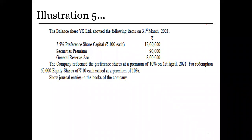For redemption, 60,000 equity shares of Rs. 10 each were issued at par at 10% premium. So here we have a problem where we are going to redeem our preference shares partly out of profit and partly out of capital. We can collect Rs. 6 lakh from the issue of fresh equity shares and the balance will be taken from general reserve.